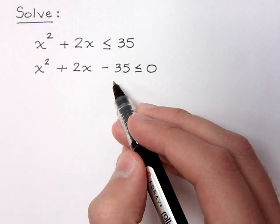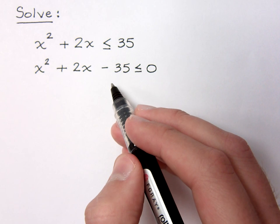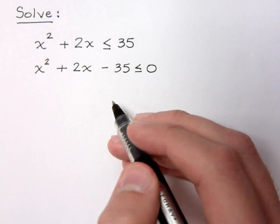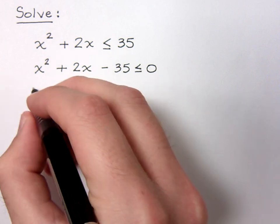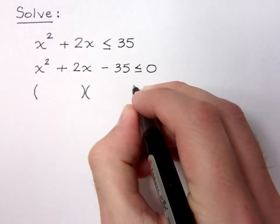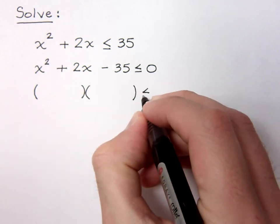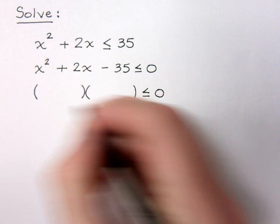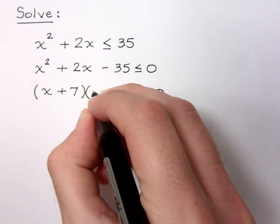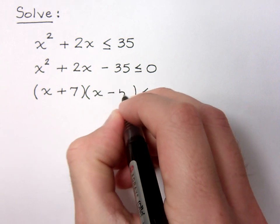So we need to find out what those guys are, and they will kind of define and separate our number line into distinct intervals. So let's go ahead and find out what those factors are. If I factor this guy just as though it were any other polynomial, I would have x plus 7 times x minus 5.